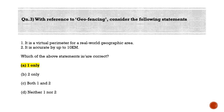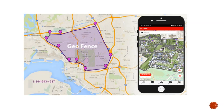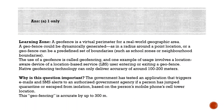The correct answer is option A — one only. A geofence is a virtual perimeter for a real-world geographical area. A geofence could be dynamically generated as a radius around a point location, or it can be a predefined set of boundaries such as school zones or neighborhood boundaries. For example, if someone has to sit in quarantine, their mobile will be used as a tracker and their home will be geofenced — if they move out, an alert is sent to authorities.